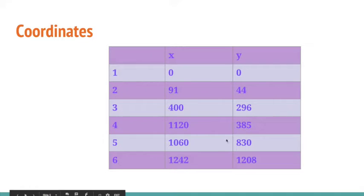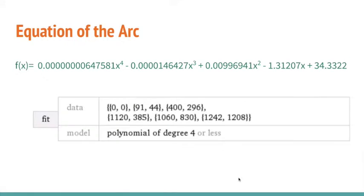Using the polynomial regression widget from Wolfram Alpha, I found the equation of the arc shown at the top in green. I set the settings on the polynomial to be of degree 4 or less to achieve the greatest accuracy.